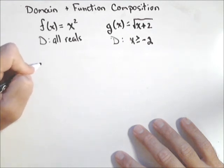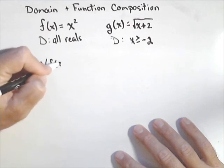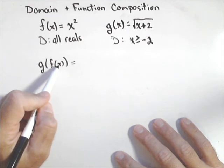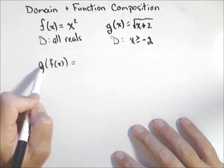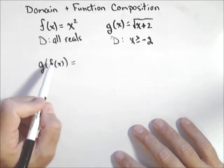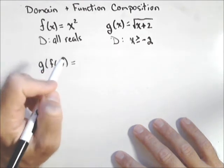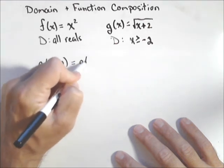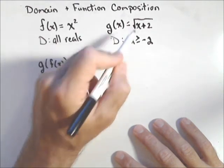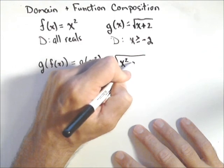So first, let's do g of f of x. Now we know for f that the domain is all reals. But we're going to need to check the domain of the composition of the two to be sure that it remains all reals, because it might not. So that means I'm putting in x squared as my input into g. So g of x squared, and putting the x squared in for x gives me square root of x squared plus two.